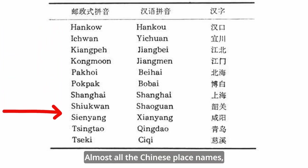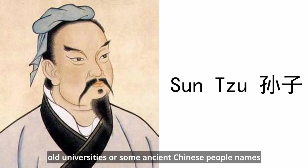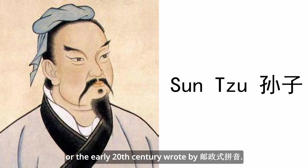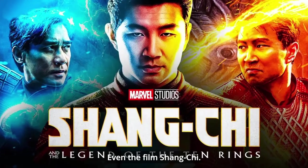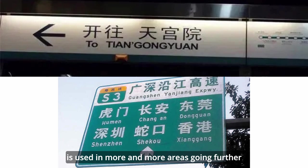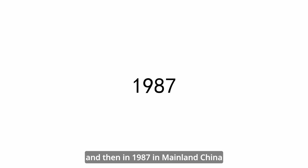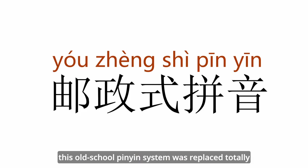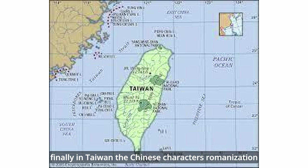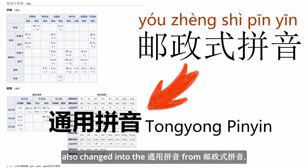Almost all Chinese place names, old universities, or mentioned Chinese people's names that were translated in the 19th century or early 20th century were written using Yu Zheng Shi Pinyin — even the film Shang-Chi. Until the modern Chinese Pinyin system was used in more and more areas, and then in 1987 in mainland China, this old-school pinyin system was replaced totally by the new Pinyin, which we can see used in road signs. Finally, in Taiwan, the romanization also changed into Tong Yong Pinyin from Yu Zheng Shi Pinyin.